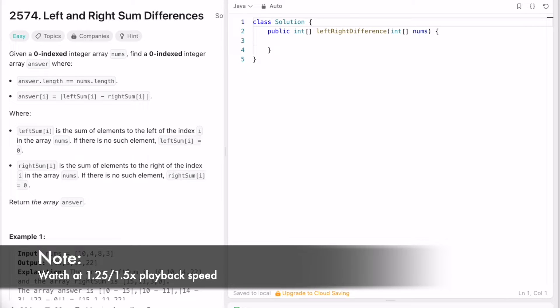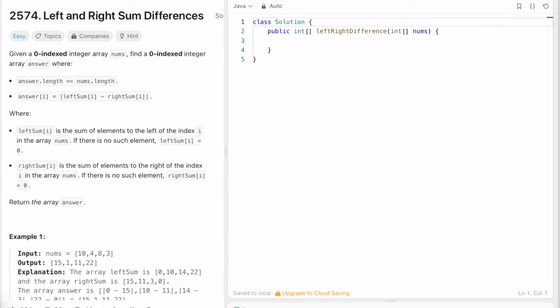Hey guys, welcome to a new video. In today's video we're going to look at a LeetCode problem. The problem's name is 2574 Left and Right Sum Differences. In this question we're given an integer array called nums, and we have to return an output array called answer where the answer array should satisfy these two criteria.